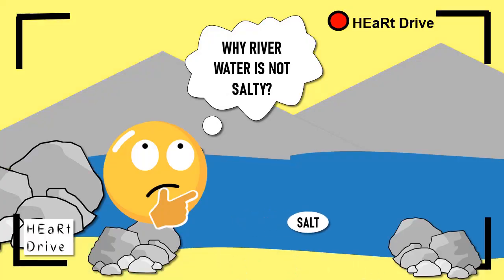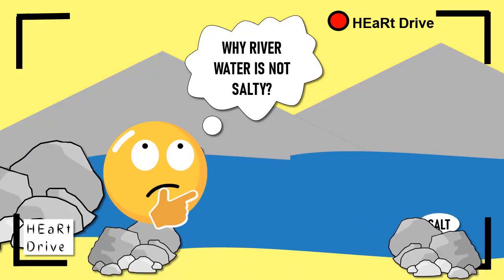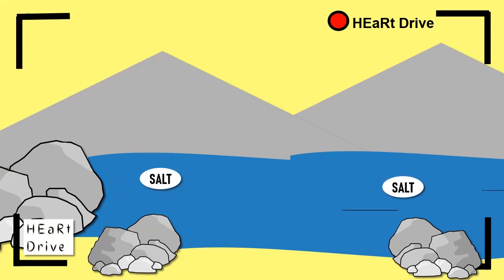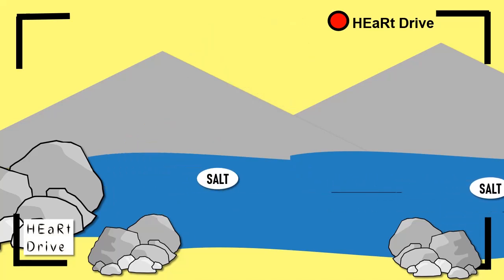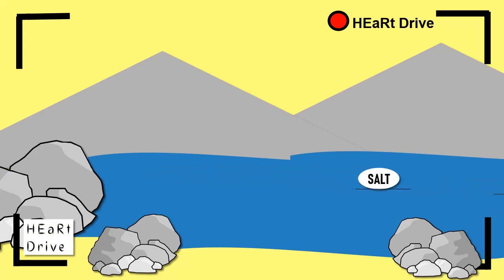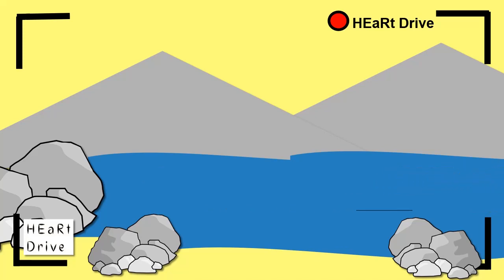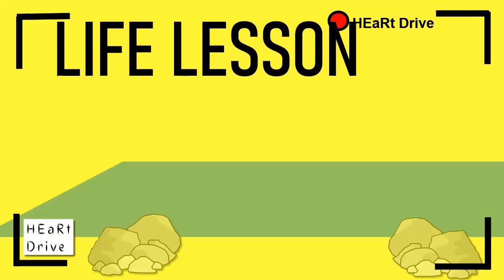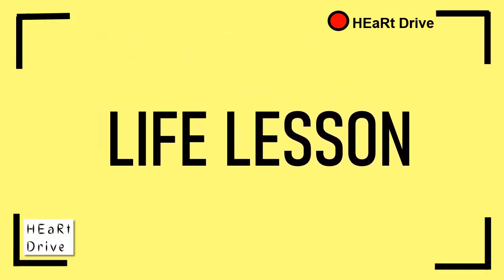The reason why river water is not salty is the fact that the river keeps running. As the river water keeps moving, no salt gets sedimented at the river, and this makes the river water salt-free water.